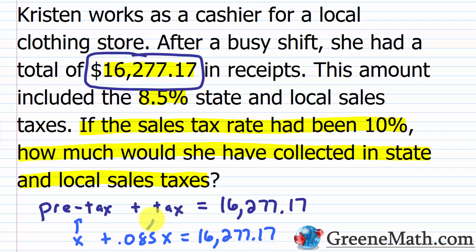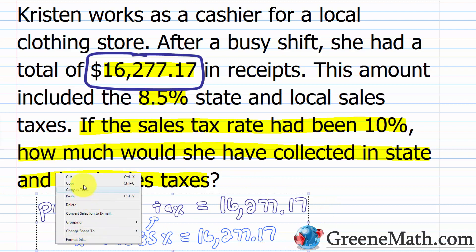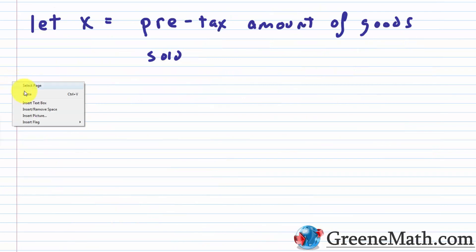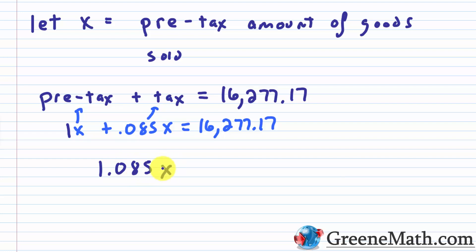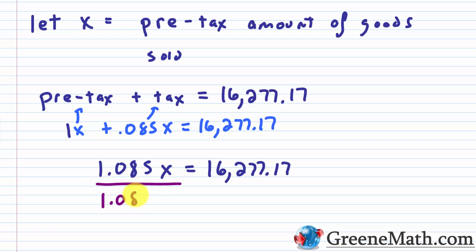It's very easy to get our equation. On the left side, this is basically 1x plus 0.085x, which equals 1.085x. This equals $16,277.17. To get x by itself, divide both sides by 1.085, and using a calculator, x equals $15,002. That is the pre-tax amount of goods sold.